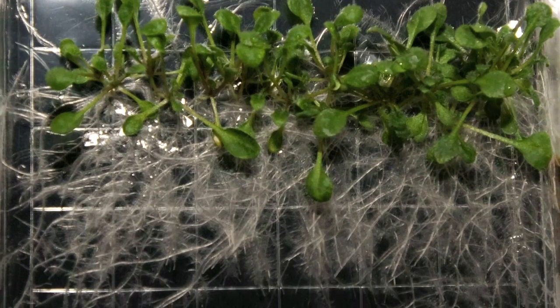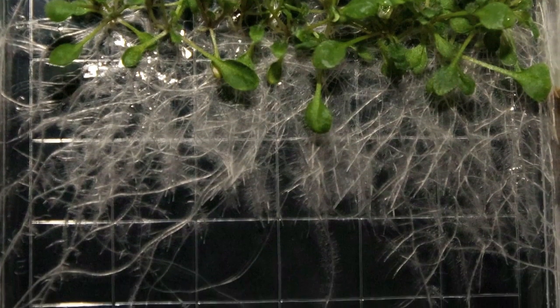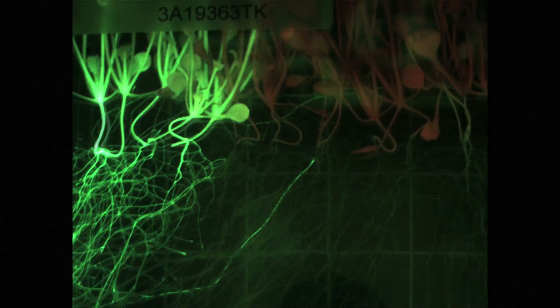Instead of gravity guiding its growth, Arabidopsis used light. A closer look at the proteins involved in plant behavior revealed that 480 genes underwent significant changes during space flight.